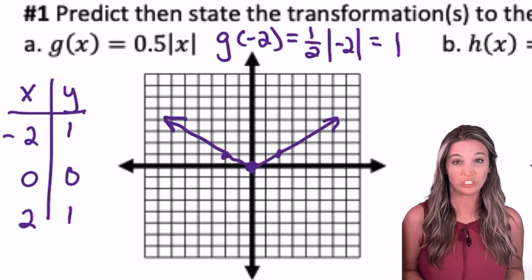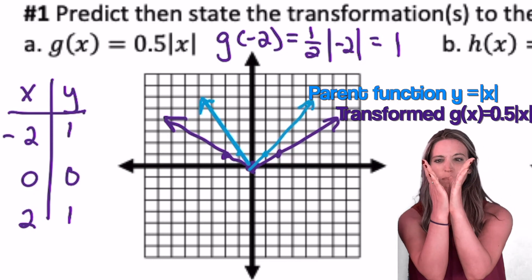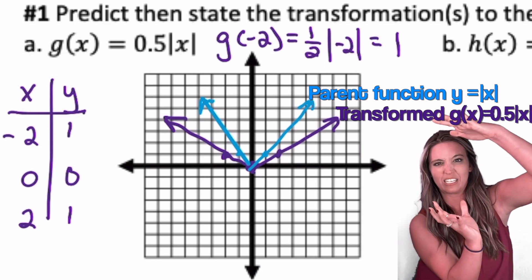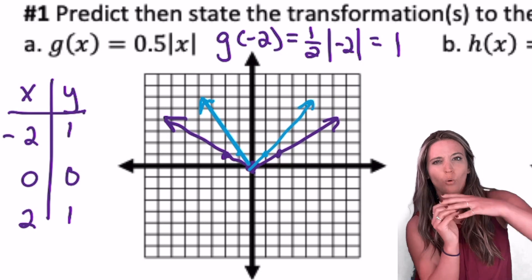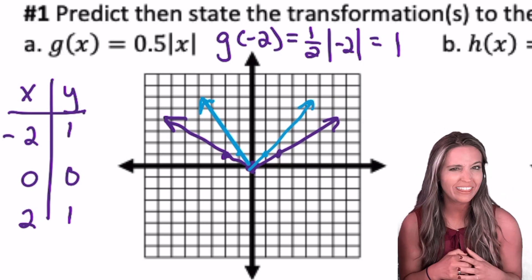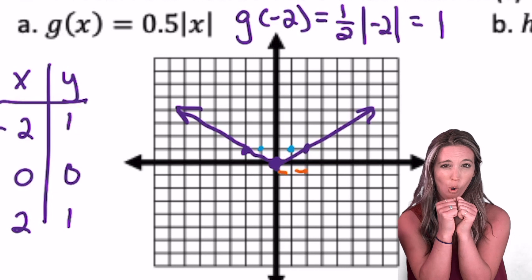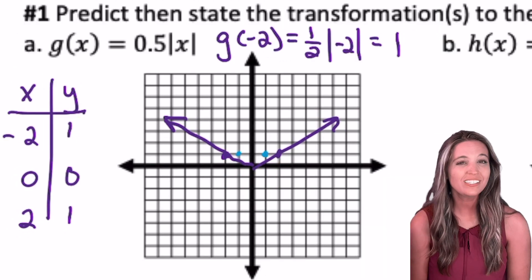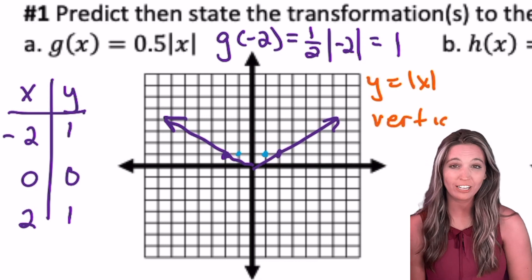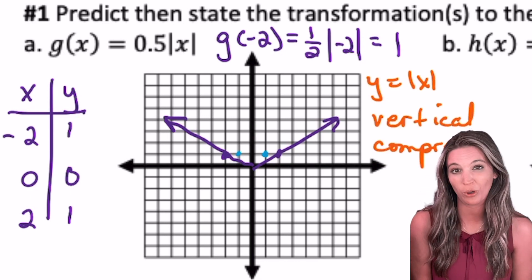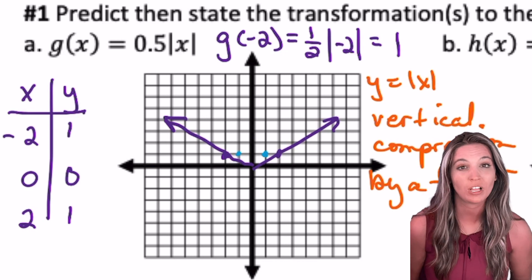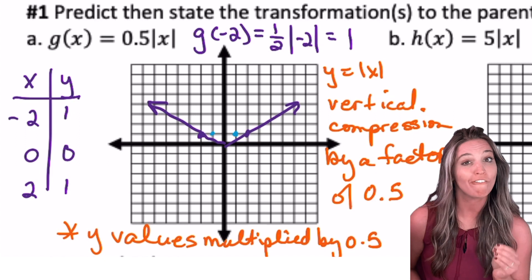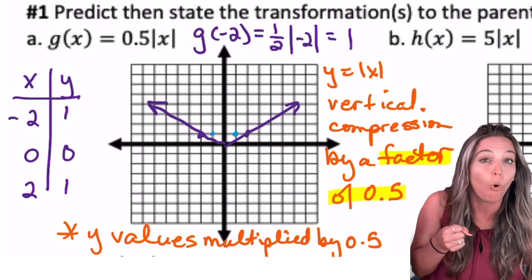Can you describe the transformation from the parent function? It looks like the shape got wider — like squishing the graph. Looking at the pattern points: from the vertex I go over two and up one. This is called a vertical compression by a factor of one-half or 0.5. All my y values get multiplied by 0.5.